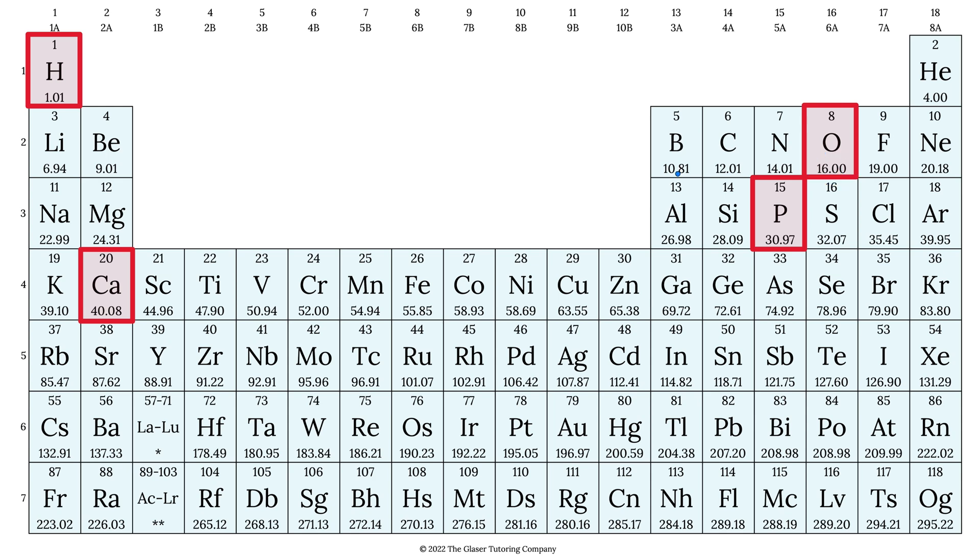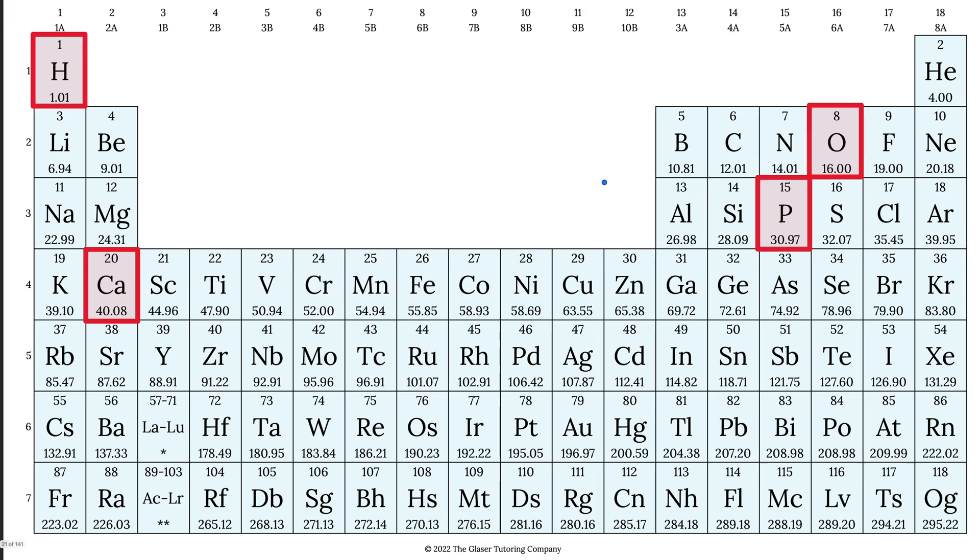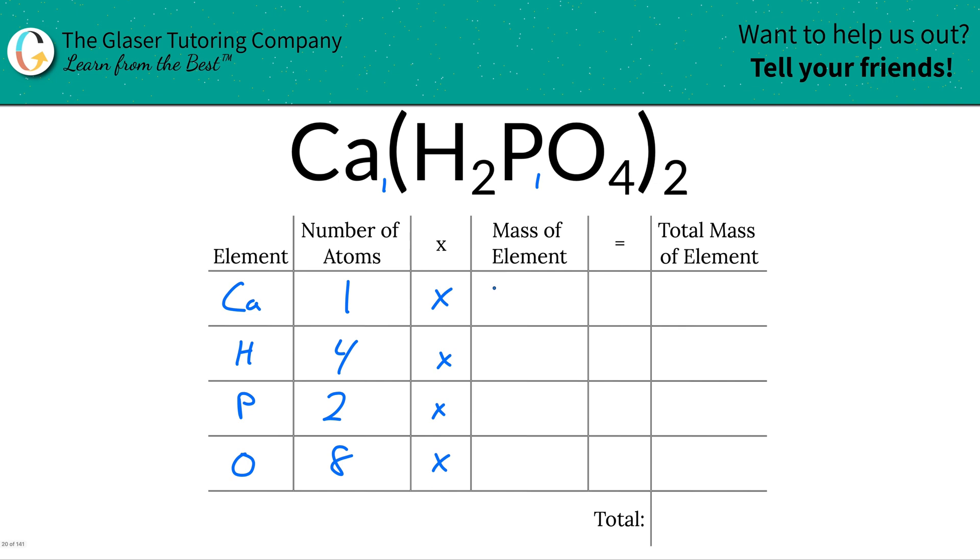And these are now going to get written down. Now they will represent grams per mole if you're talking about molar mass or AMU if you're talking about molecular mass. So let's write it on down. So calcium was 40.08, hydrogen was 1.01, phosphorus was 30.97, and oxygen is 16.